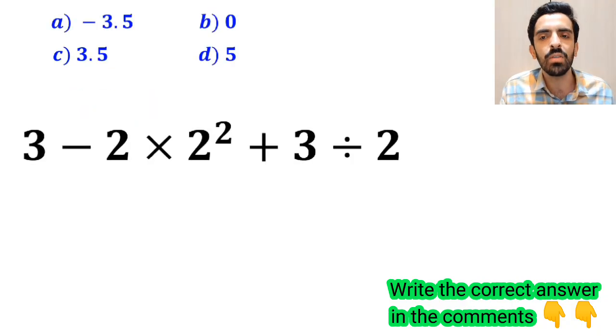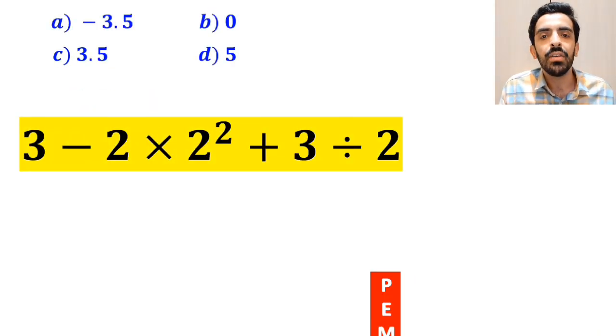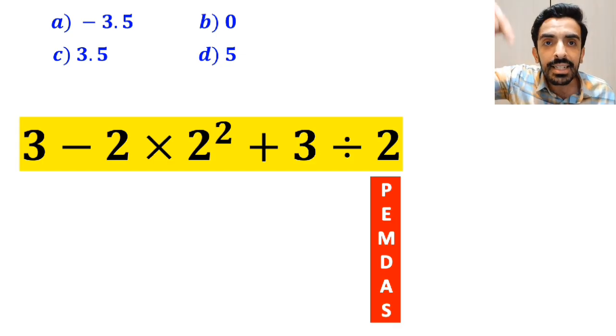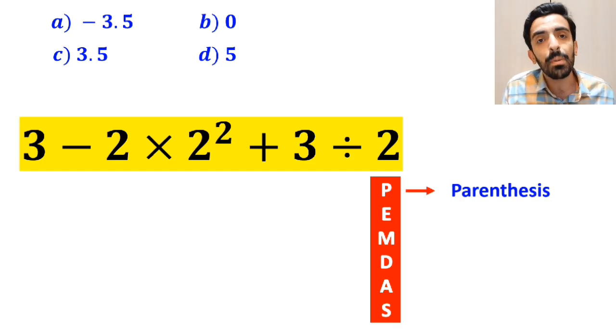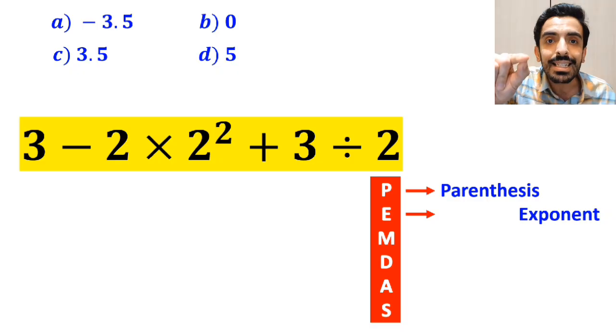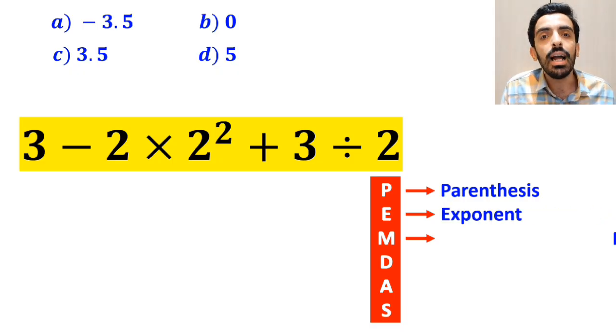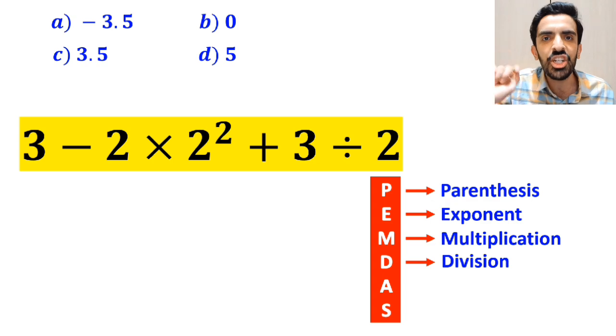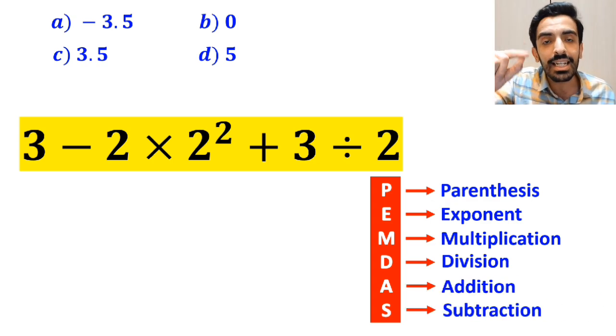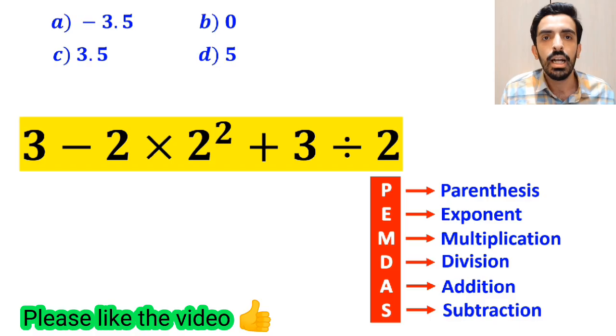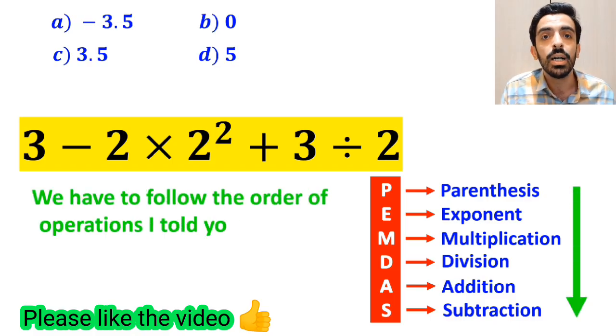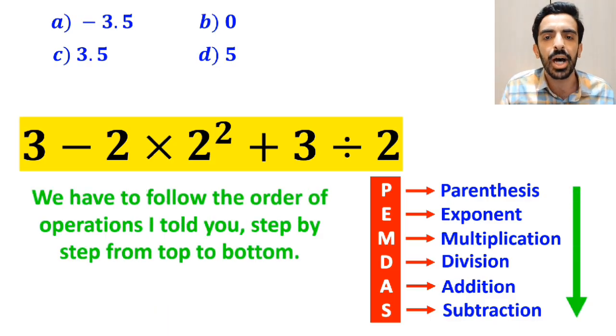Now let me show you how to solve this expression properly. To solve this question, we need to follow the PEMDAS rule. In this rule, P stands for parentheses, E stands for exponent, M stands for multiplication, D stands for division, A stands for addition, and S stands for subtraction. We have to follow the order of operations I told you, step by step from top to bottom.